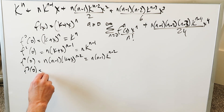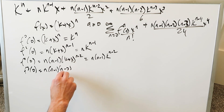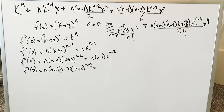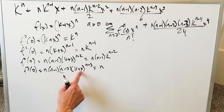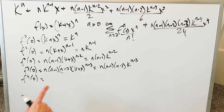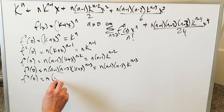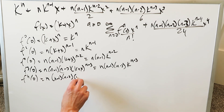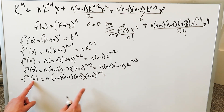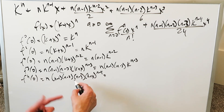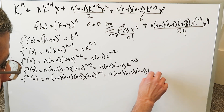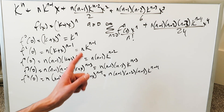The third-order derivative: n(n−1)(n−2) · (k + x)^(n−3); putting x = 0 gives n(n−1)(n−2) · k^(n−3). The fourth-order derivative: n(n−1)(n−2)(n−3) · (k + x)^(n−4); putting 0 in place of x gives n(n−1)(n−2)(n−3) · k^(n−4). We've now found all derivative factors with x = 0 substituted in.